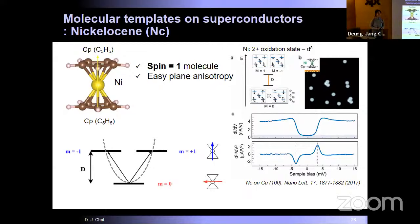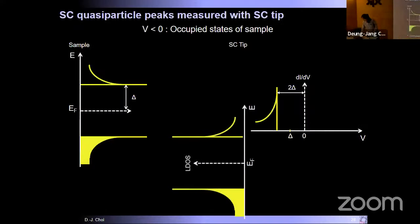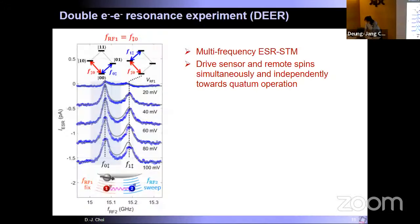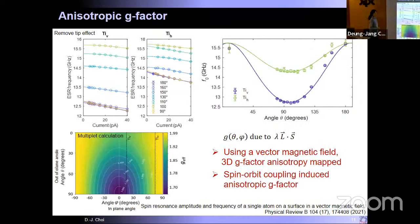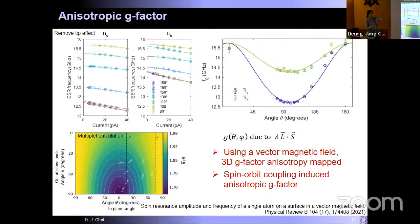Another question about the current-dependence measurement to extract the intrinsic Larmor frequency: the reason is that the tip also has magnetic atoms that introduce an effective magnetic field. To remove this tip effect and get the intrinsic value, we perform the current-dependence measurement. By extrapolating to zero current — meaning the tip is far away — we remove the tip's effective magnetic field contribution and obtain the intrinsic resonant frequency.